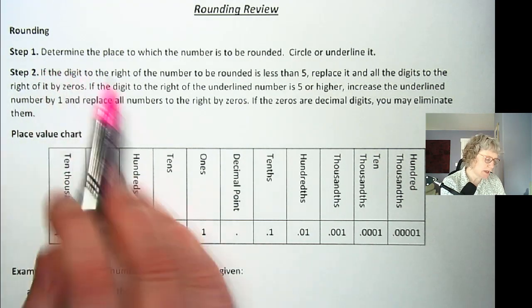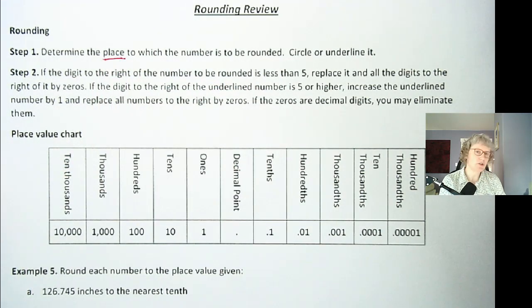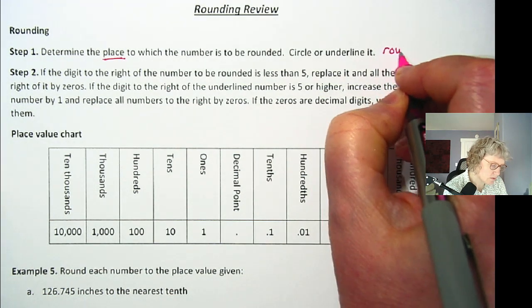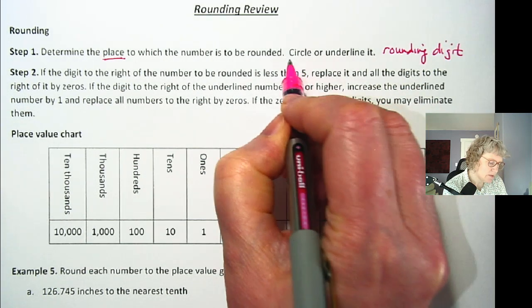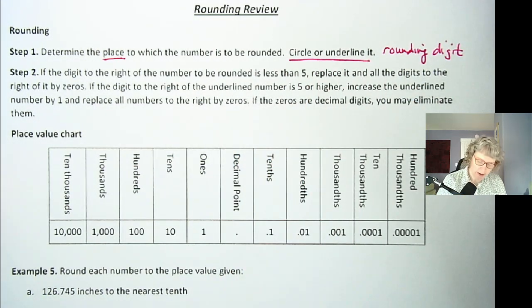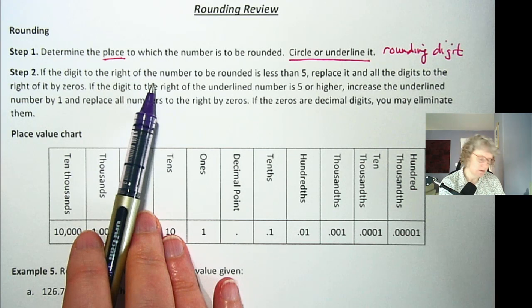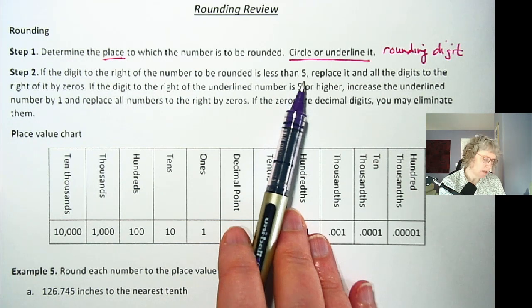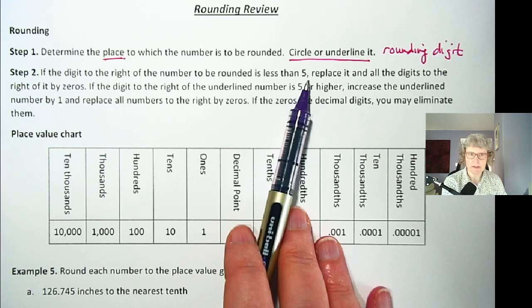So it's kind of spelled out here. Let me go through the steps that are written. Step one is determine the place to which the number is to be rounded. So that's the actual digit that we're rounding. Sometimes it's called the rounding digit, and it can be helpful to circle or underline it. Once we figure out the digit, then we're going to look to the right of that number. This is where you may remember the less than five or over five. If the digit is less than five, then we keep the number the same.